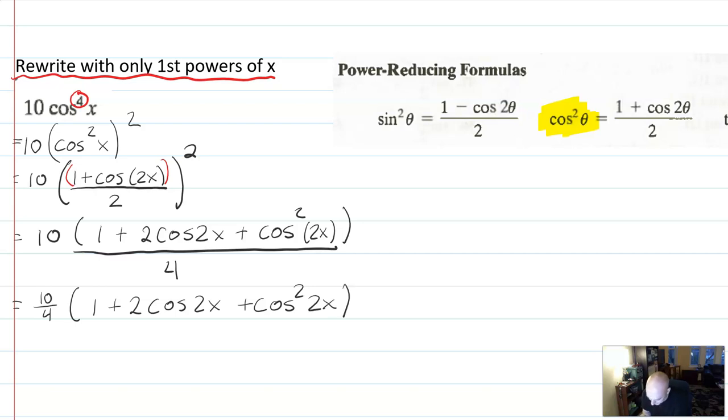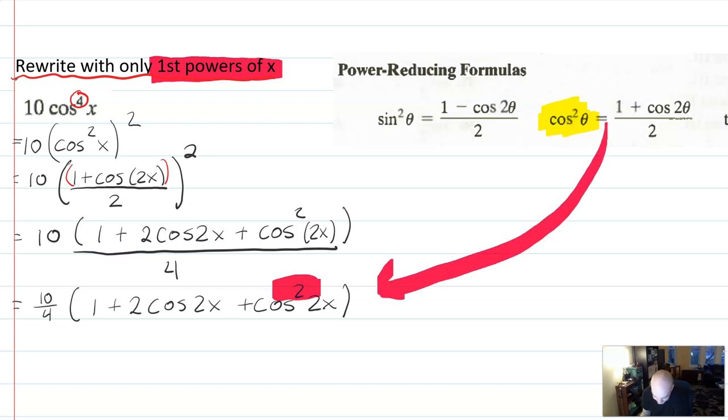We're done, right? We've used the power reducer identity. Okay. Cool. Problem over. Wait. No. Because that's a cosine squared. And our job was to write with only first powers of x. So guess what? We need to use the power reducer identity again.